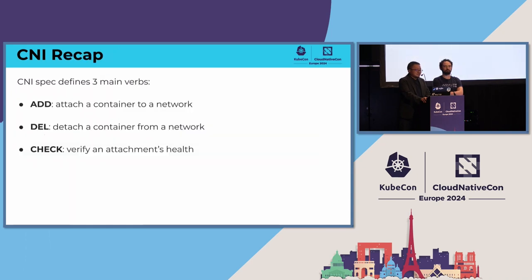CNI mainly has verbs — we call them commands in the spec. We have three commands: ADD, DEL, and CHECK. ADD is attaching the container to the network. DEL is detaching the container from the network. So when you're launching a pod, ADD is used, and when you're removing a pod, DEL is used. CHECK is the verified attachment — it checks the interface attributes, such as the IP address, to verify the interface is in the expected state or not.